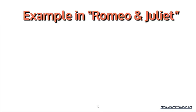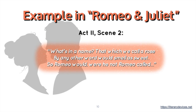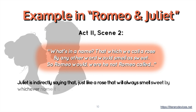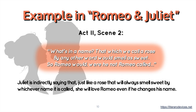Let's look at an example of analogy in Romeo and Juliet, Act 2, Scene 2: 'What's in a name? That which we call a rose by any other word would smell as sweet. So Romeo would, were he not Romeo called.' Juliet is indirectly saying that just like a rose that will always smell sweet by whichever name it is called, she would love Romeo even if he changes his name.